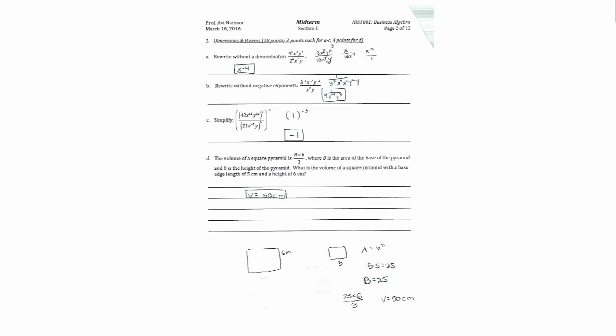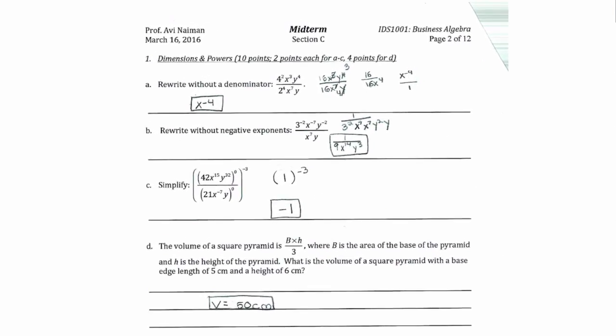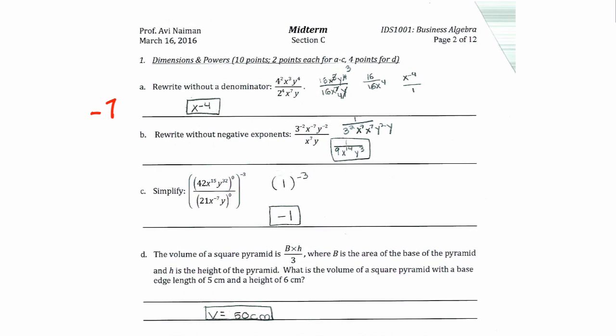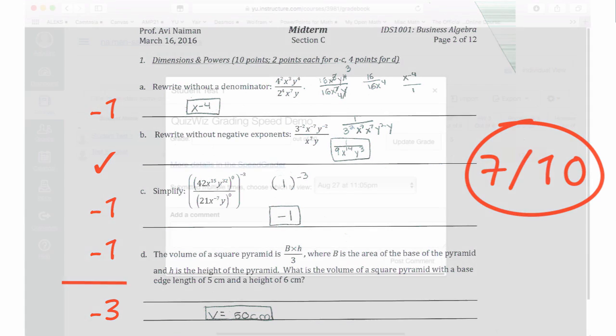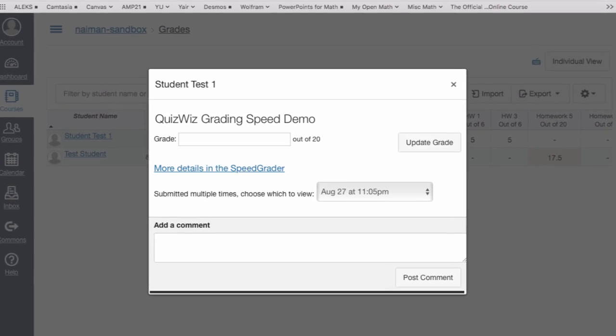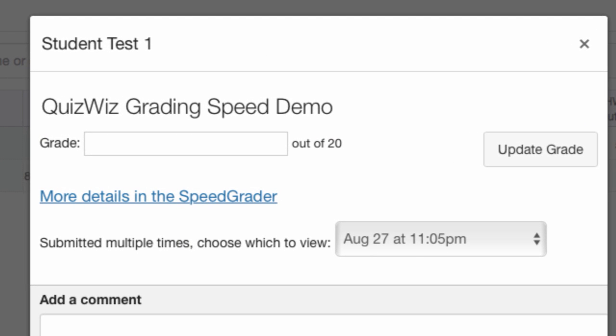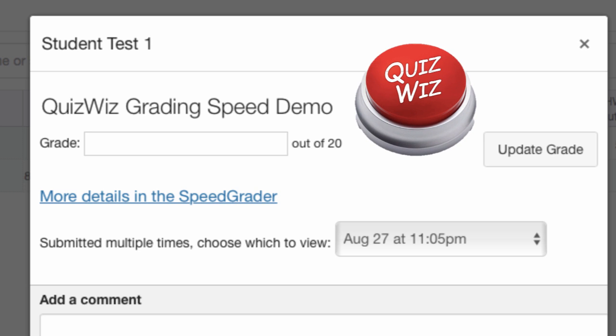Since most students deserve most points on most questions, many teachers assign grades by deducting points from any answer that does not deserve full credit, subtracting the sum of all such deductions from the total possible points for that assignment. To mimic this workflow, James Jones and Avi Naiman have created QuizWiz, a JavaScript enhancement to SpeedGrader.